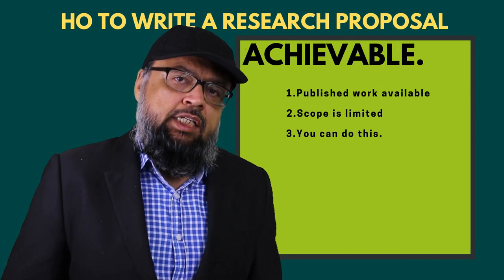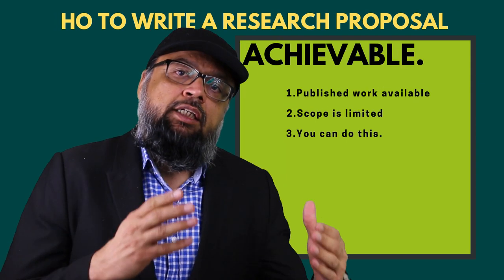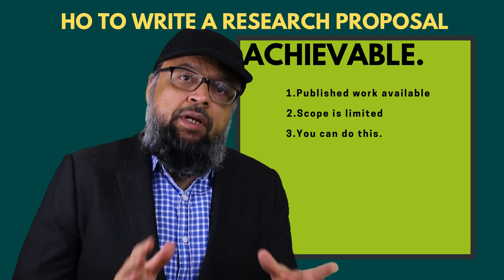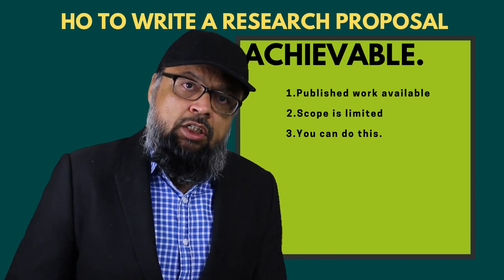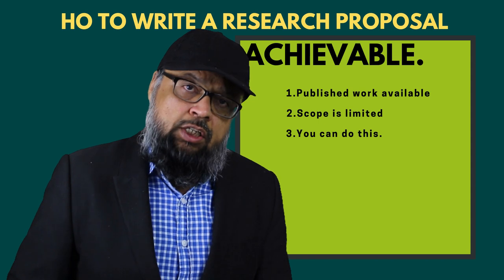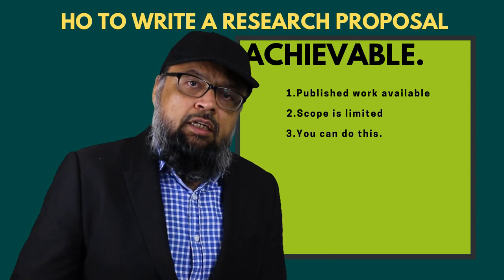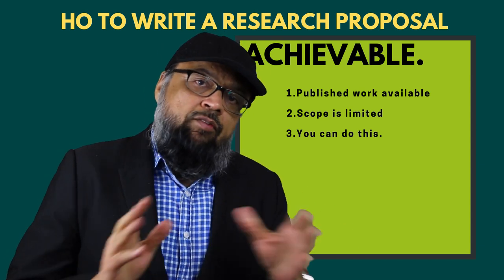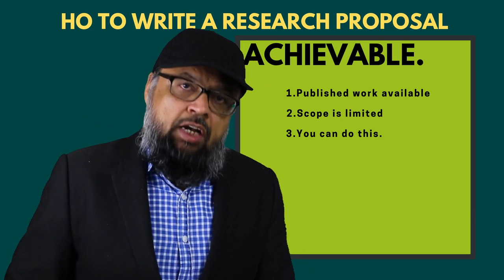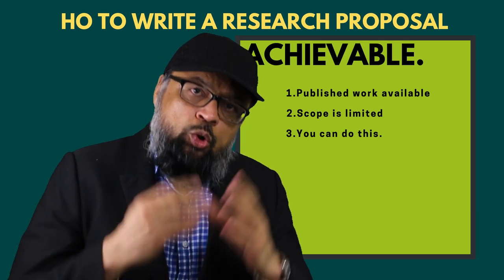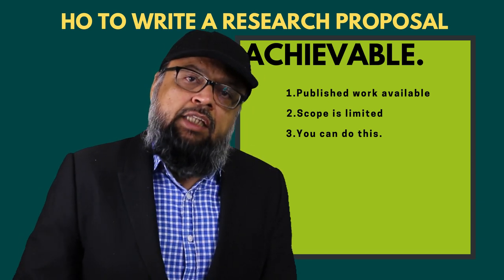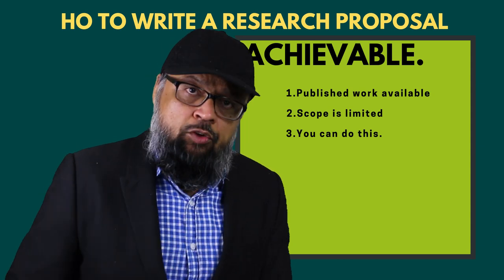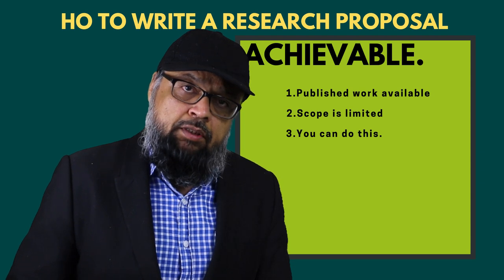The fourth element is showing that your intended research is achievable. The first thing is that there must be some published, peer-reviewed literature available in that field. Sometimes people think that if there is no literature it is easy to do the research, but that's wrong — not everyone is Einstein. If there is no literature available, it would be difficult to do research in that field. So make sure some published, peer-reviewed, authentic literature — like journal articles — is available.